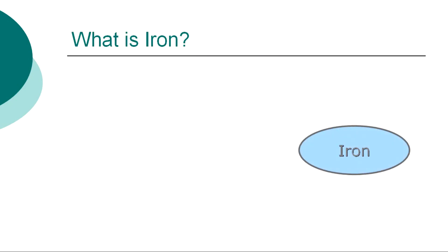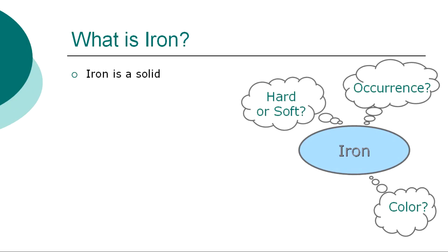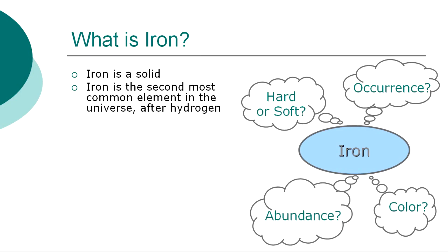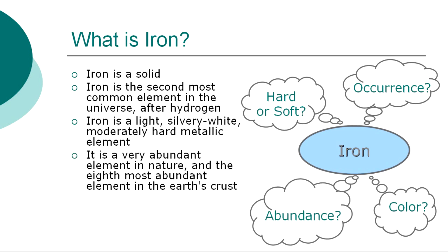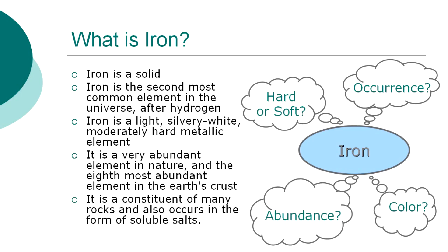What is iron? In a general overview of the element, we can at first describe iron as a solid. It is a heavy, malleable, ductal, magnetic, silver-white, metallic element that readily rusts in moist air, occurs native in meteorites, and combined in most igneous rocks is the most used of metals, and is vital to biological processes as in transport of oxygen in the body. Steel is the best known alloy of iron.